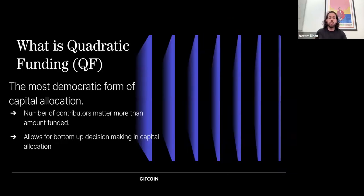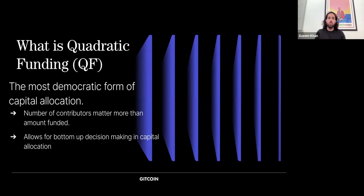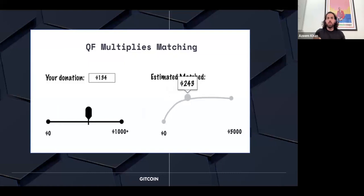Quadratic funding is a democratic form of capital allocation — a crowdfunding platform where donors come together and make individual donations. We've seen an average of $12 per crypto wallet, but as low as $1. Those donations count as votes, allowing for bottom-up decision-making in how capital is distributed to the projects we work with. There's a sliding scale we've created for how matching works, which I'll explain in a moment.